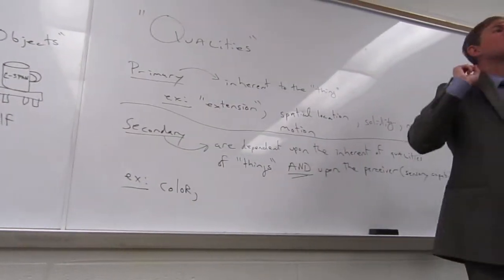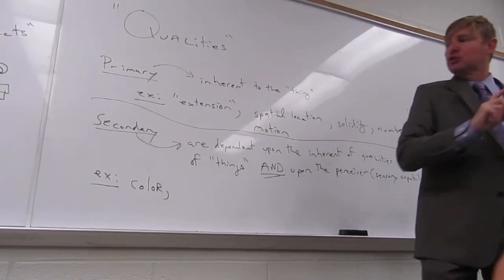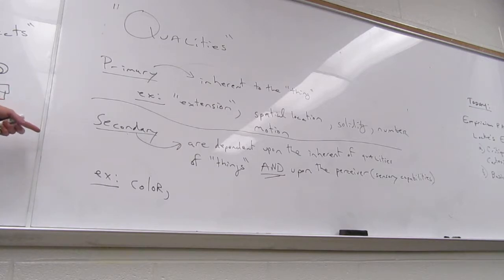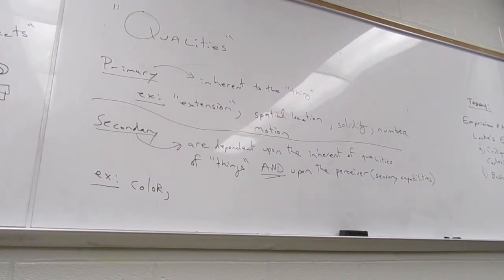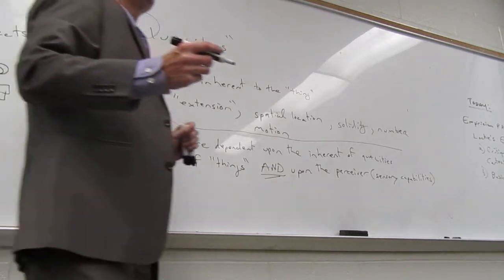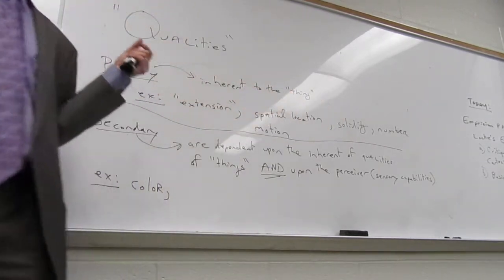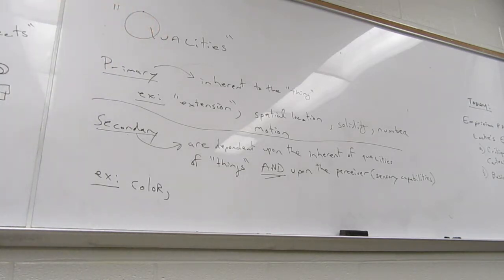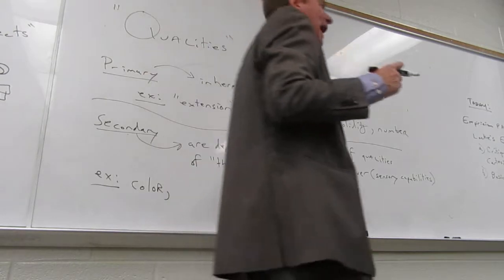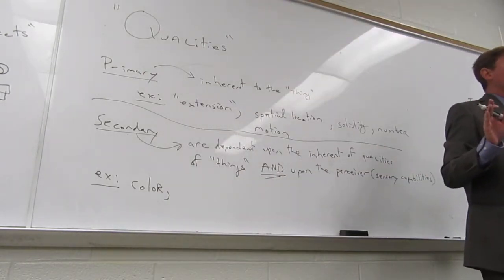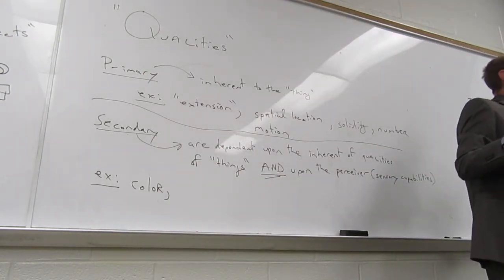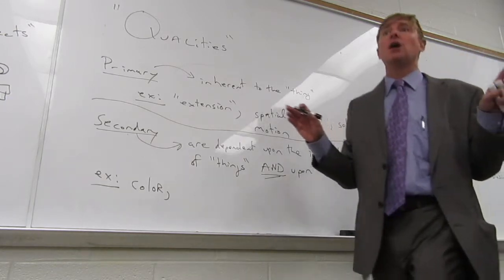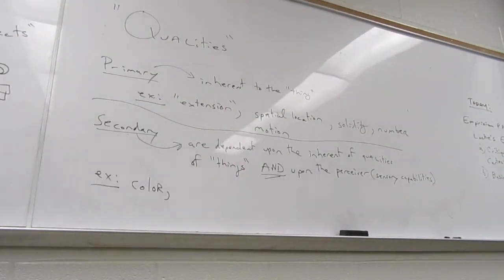Secondary qualities require a perceiver in order to exist. The easy example when talking about secondary qualities is to talk about color. The grass is not inherently green, according to this. The reason why the grass is green is because we have sensory apparatus, and when I say we, I'm assuming too much. Some of you folks might be red-green colorblind. Some of you may be totally colorblind. And for you people, green does not exist.